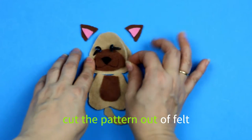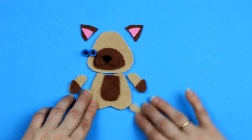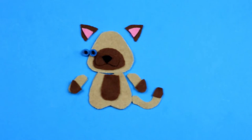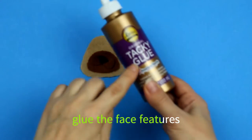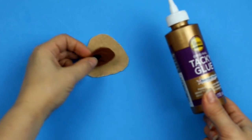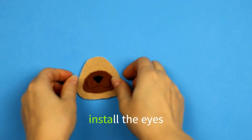We cut the patterns out of the felt. We're gonna glue the face features first and then we're gonna sew them in place after we install the eyes.